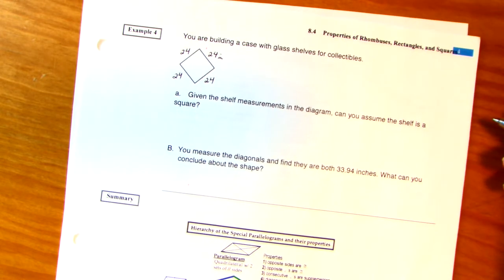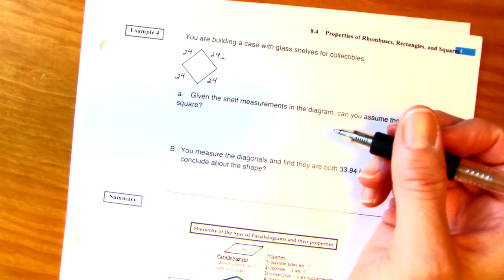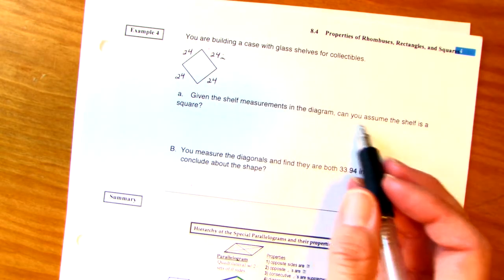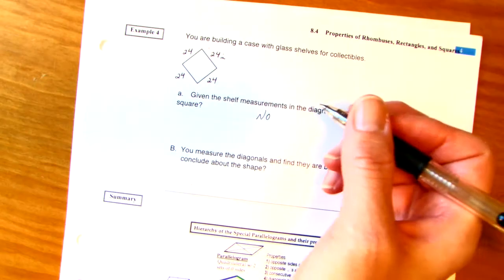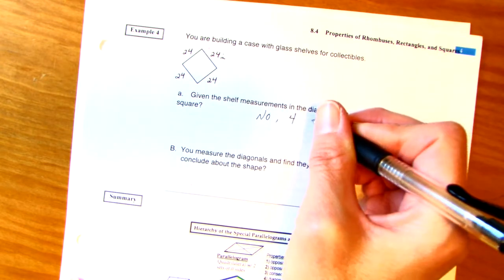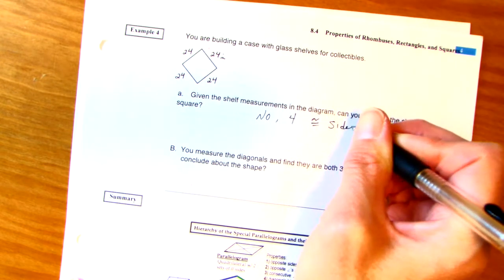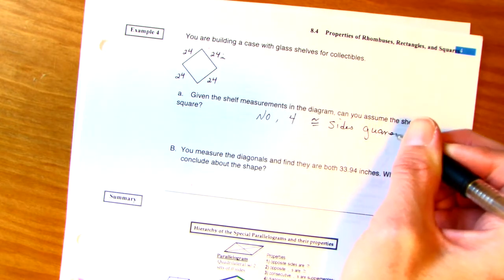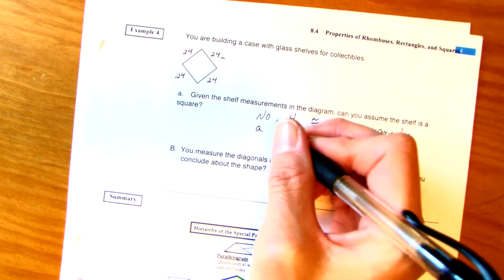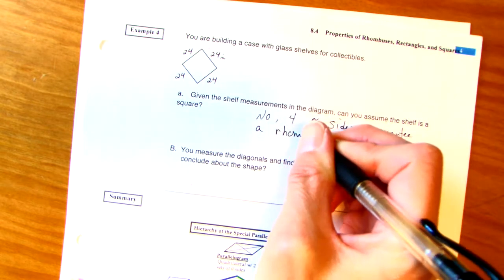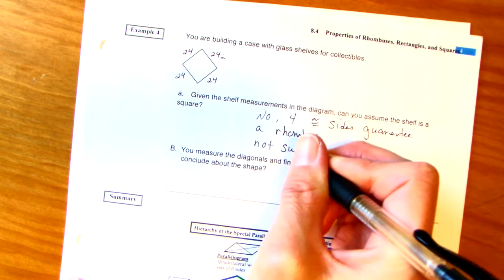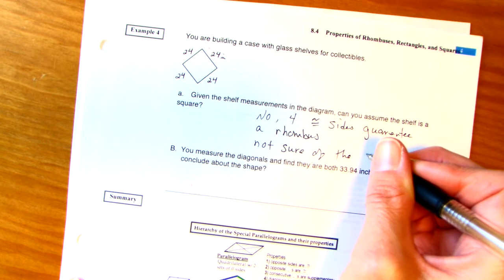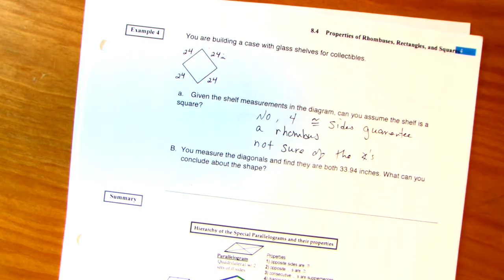So you're building a case with glass shelves for collectibles. Each length is 24 inches. Given the shelf measurements in the diagram, can you assume the shelf is a square? No. Why not? You have four congruent sides guarantee a rhombus. We don't know anything about the angles. We're not sure of the angles. Of course, if we knew they were right angles, or if we knew one of them was a right angle, that would be enough to find.